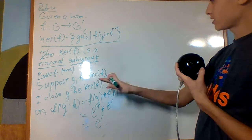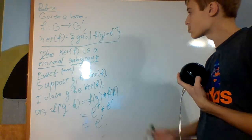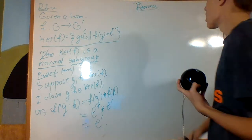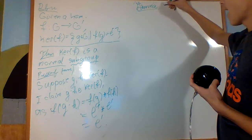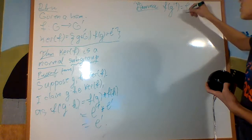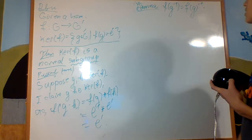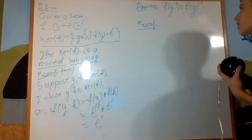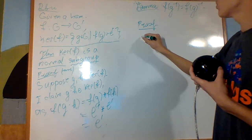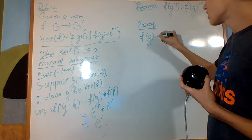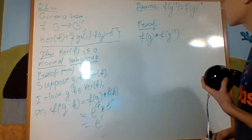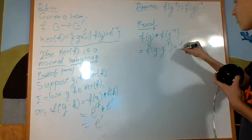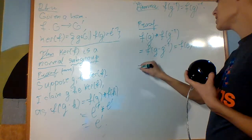That's the proof that it's a subgroup, but we also need to show it has inverses. Let's prove a quick lemma: F of G inverse is equal to F of G inverted. Proof: F of G times F of G inverse equals F of G times G inverse by the homomorphism property, which is F of E, which equals E prime. Note that F of E equals E prime because F of G times E equals F of G times F of E equals F of G, so multiplying by F of G inverse on both sides gives F of E equals E prime.